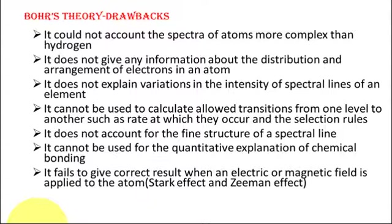Another main drawback was that it could not account for the fine structure of the spectral lines. It also cannot give a quantitative explanation of chemical bonding, and it fails to give the splitting of spectral lines in electric and magnetic fields.